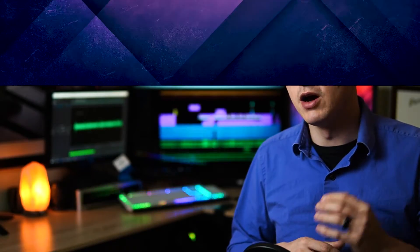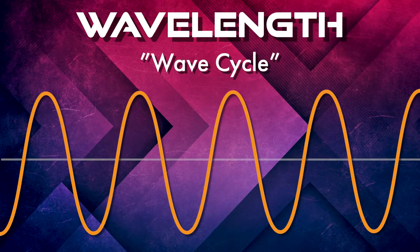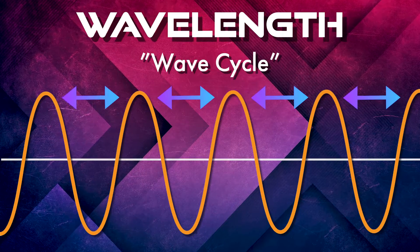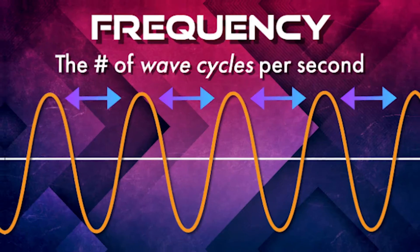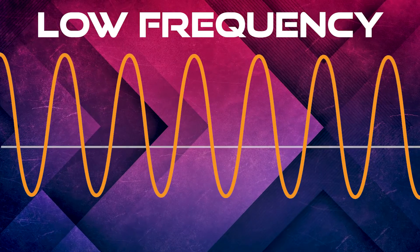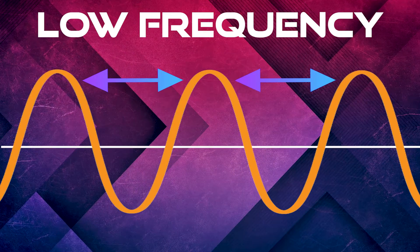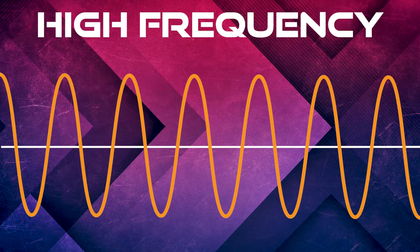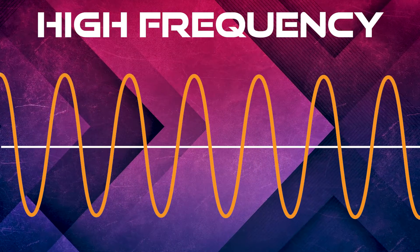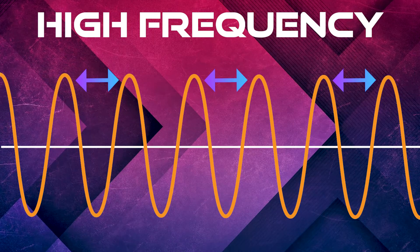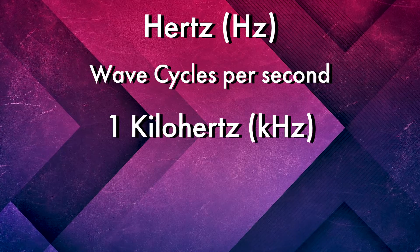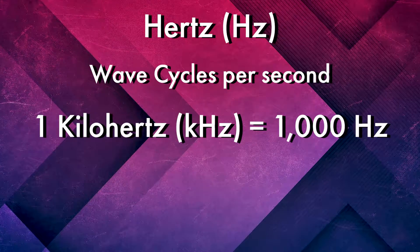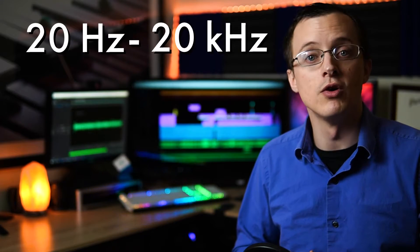To set us up for frequency: a wavelength or wave cycle is the distance from the start to the end of a single sound wave. Frequency refers to the amount of wave cycles per second. A lower frequency will have less cycles per second and more space between the wave cycles. A higher frequency will have more cycles per second and less space between wave cycles. Frequency is measured in hertz, or cycles per second. One kilohertz is equal to a thousand hertz. Humans can hear frequencies between 20 hertz to 20 kilohertz, or 20 thousand hertz.